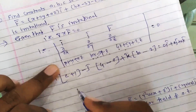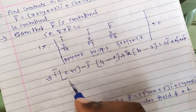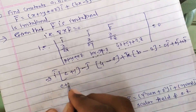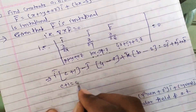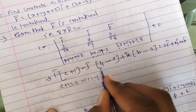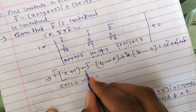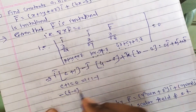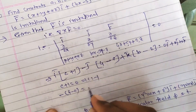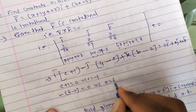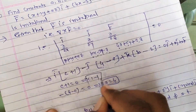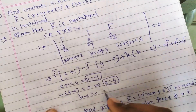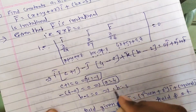Equating coefficients: for î: c + 1 = 0, so c = −1. For ĵ: −(4 − a) = 0, so a = 4. For k̂: b − 2 = 0, so b = 2. Therefore the values are a = 4, b = 2, c = −1.